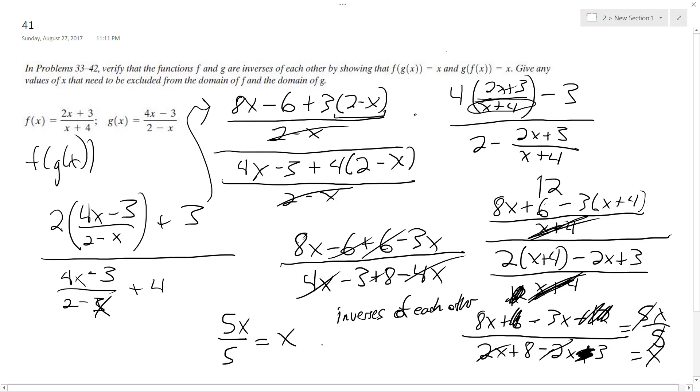And x is all real except x cannot equal negative 4 or 2 in the denominator because that will make it equal to 0. But otherwise, all reals. Okay, and that's it. There we go.